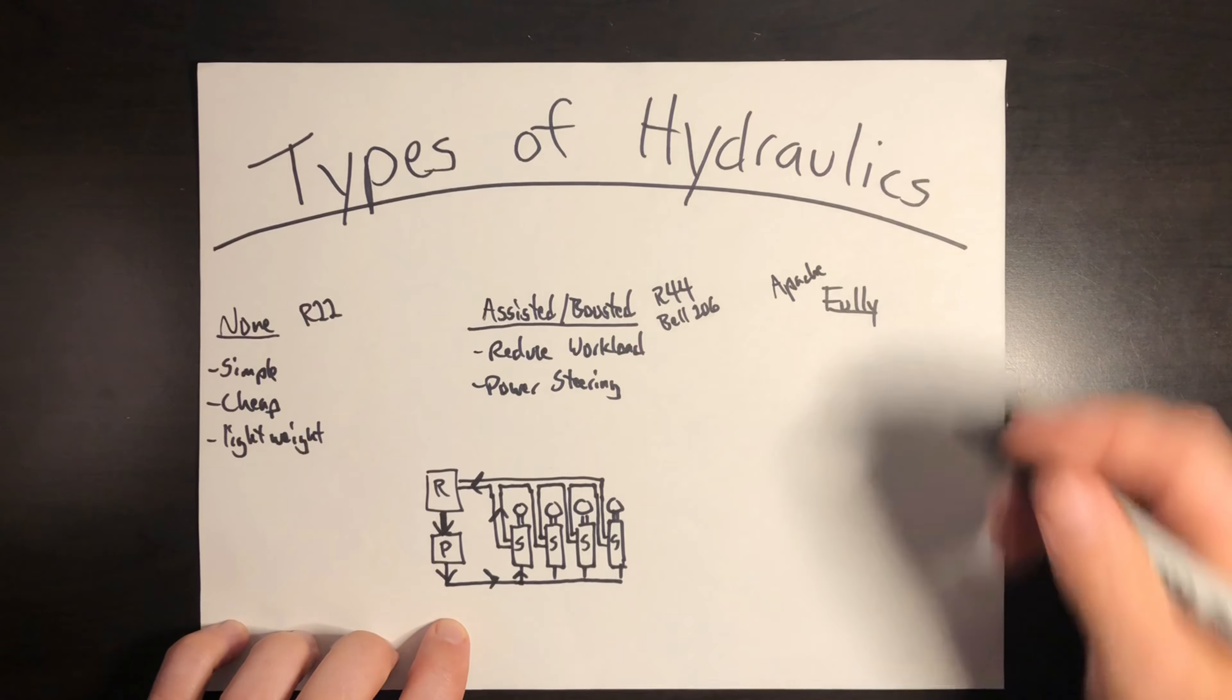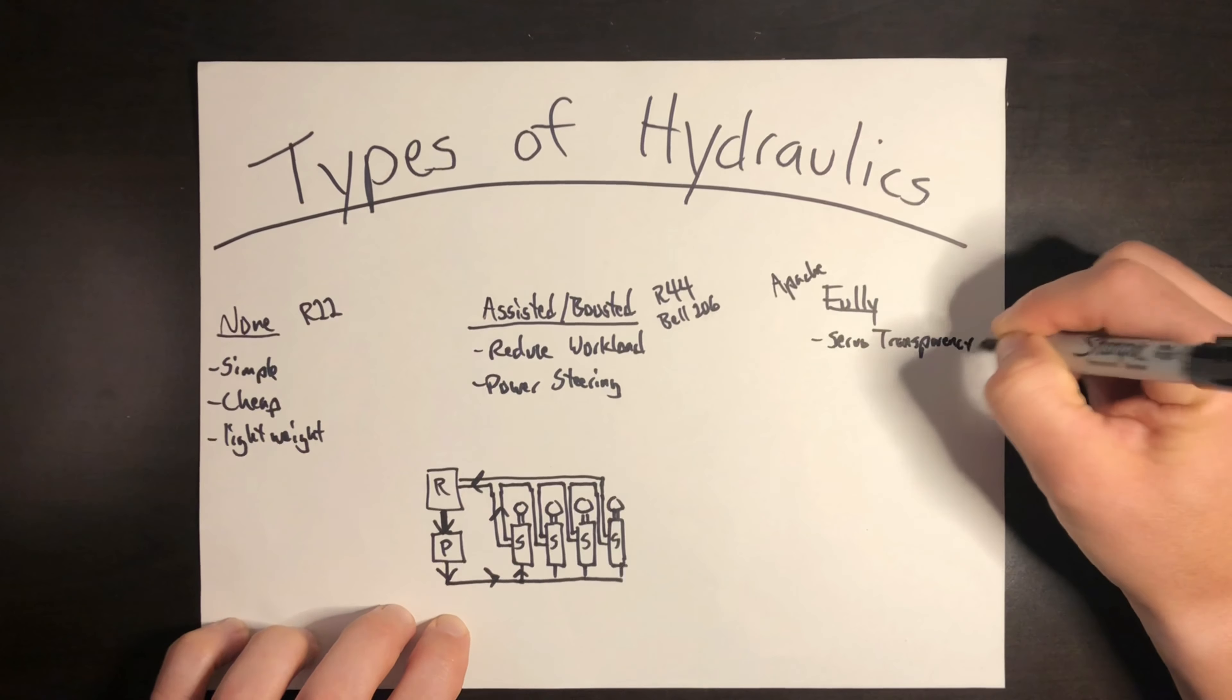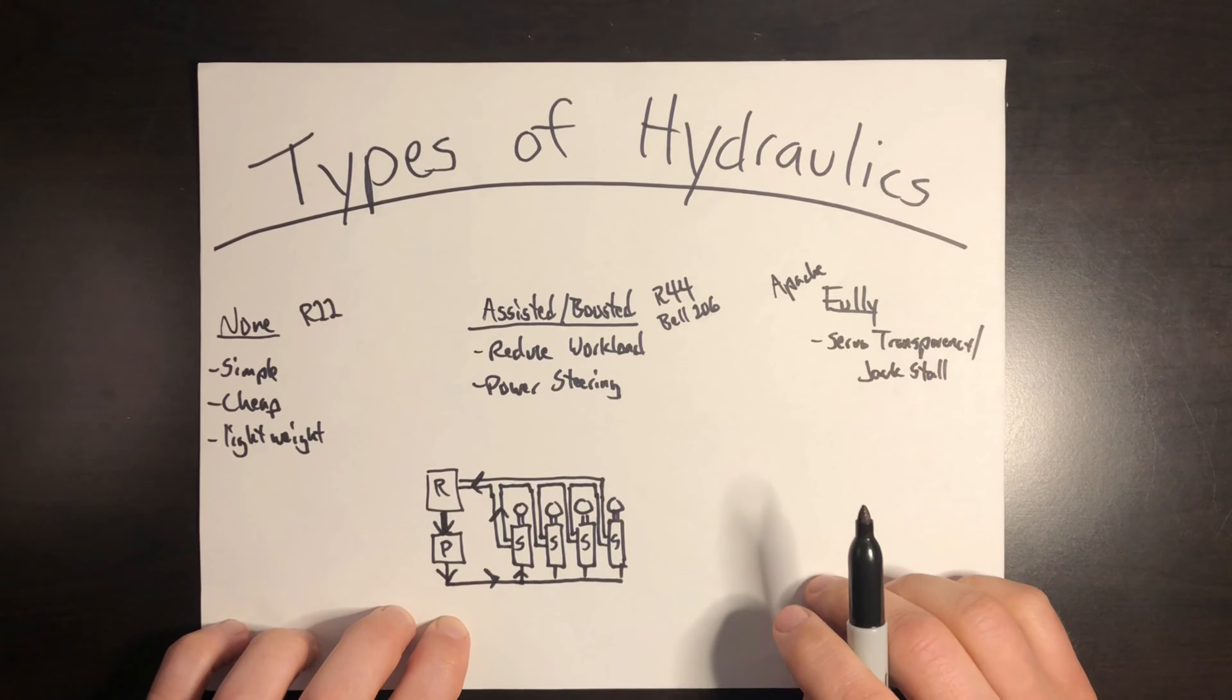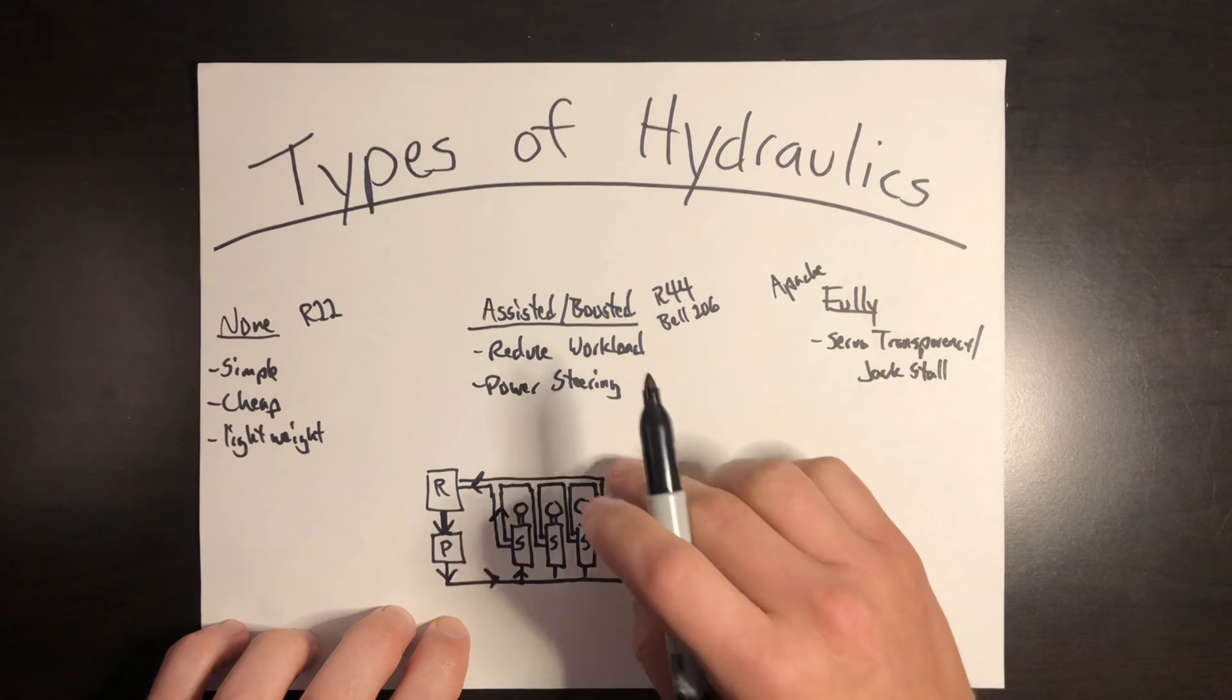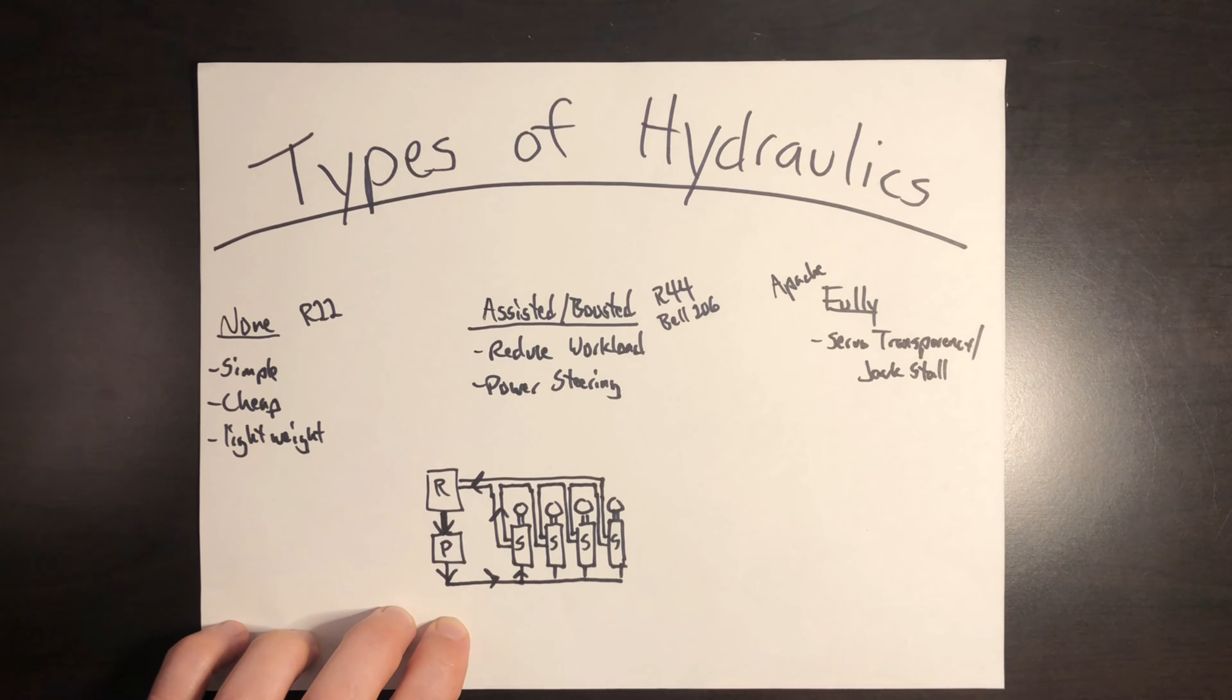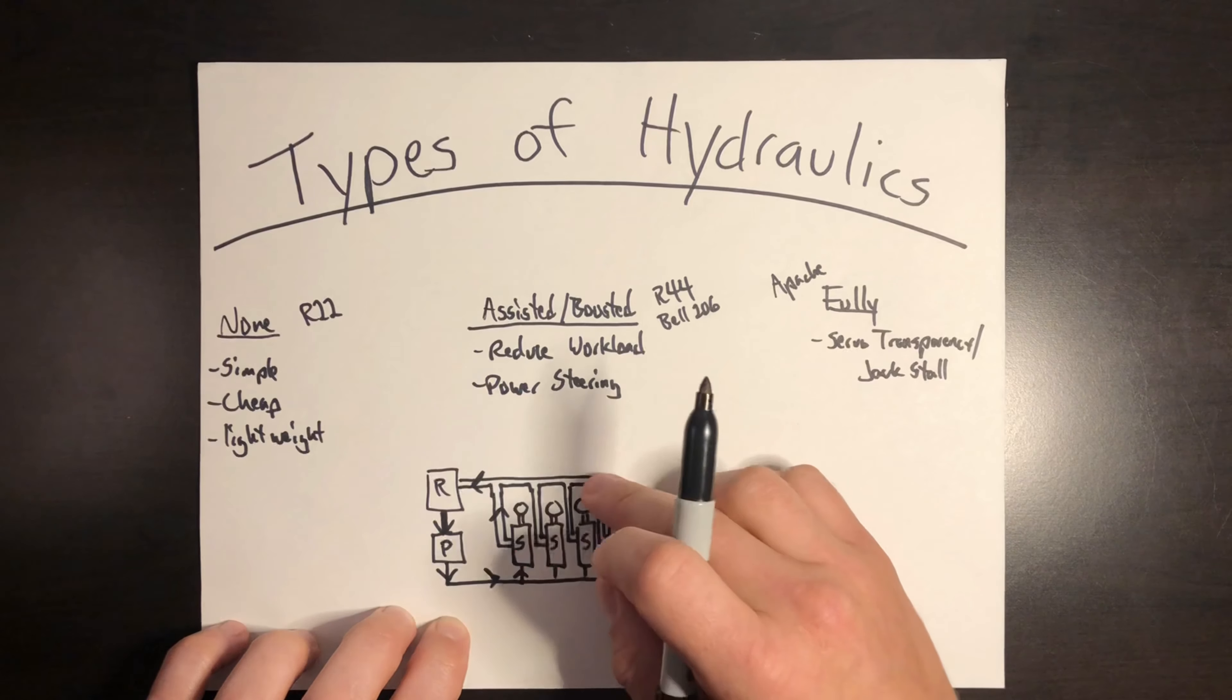All right, so moving on from hydraulically assisted or boosted, we have the fully hydraulic system. These are the type that many of your military helicopters, namely your Apache, is installed with. And the reason for that is because flight testing and historic crash investigations have found that hydraulically boosted systems can experience what's called a servo transparency phenomenon. Also known as a jack stall, and this defeats that.